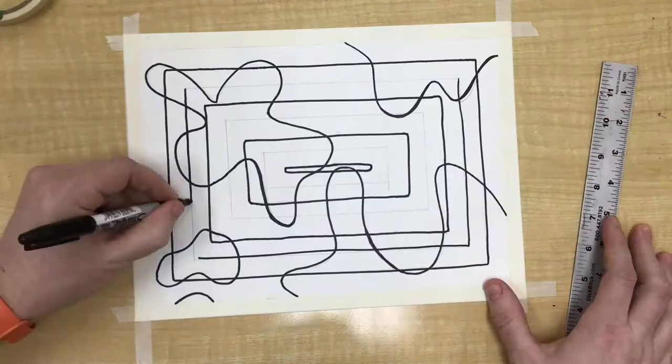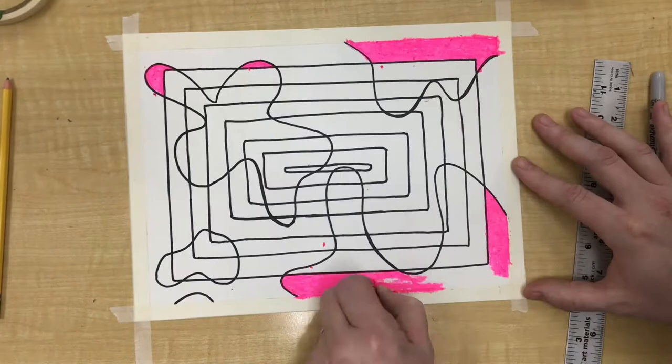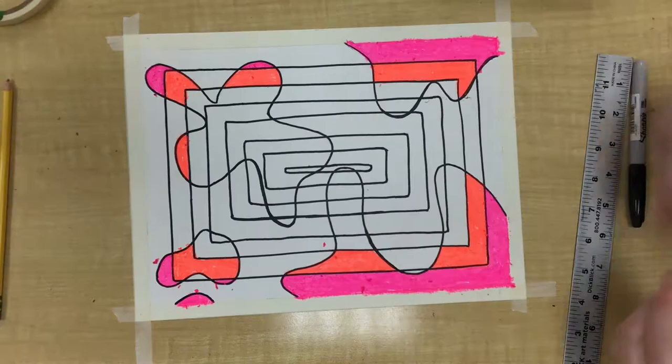I used oil pastels to neatly color inside of my organic shapes. As the organic shape hit a different concentric stripe or rectangle, I simply changed colors to go along with that pattern.